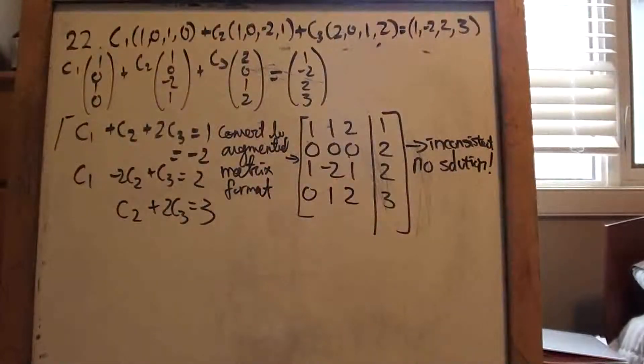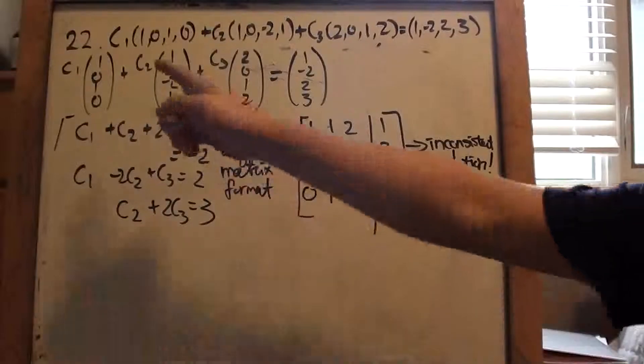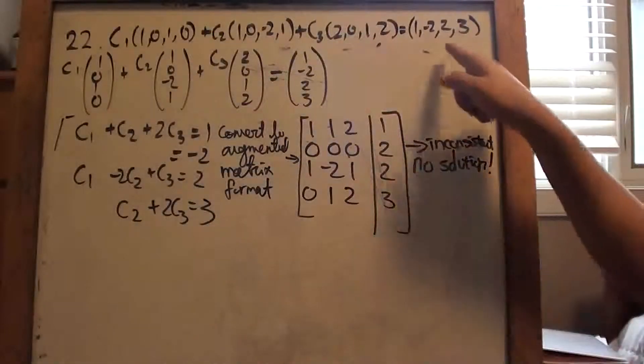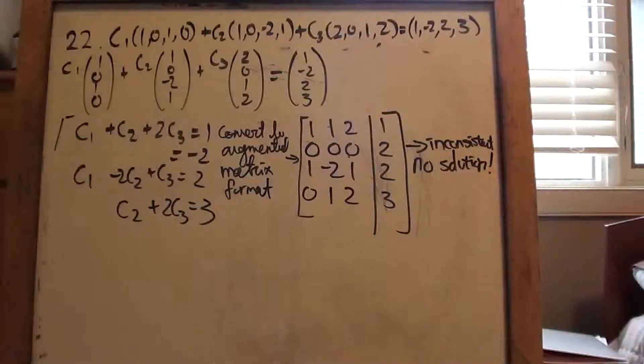Okay, so this is 22. Again, similar idea, right? The only difference now is rather than trying to, actually, it's essentially the same idea. They already just told you from the get-go that c1, c2, c3 values, oh, sorry, that. Any c1, c2, c3 scalar values, constants, cannot give me this, right? So, that's basically saying there is inconsistent solution. Go find it.